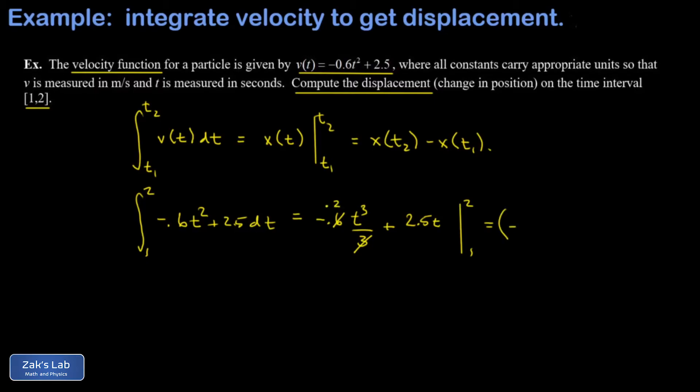Then I substitute in the upper limit and I get negative 0.2 times 2 cubed plus 2.5 times 2, minus negative 0.2 times 1 cubed plus 2.5 times 1.